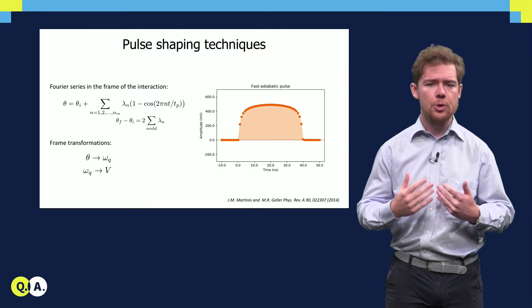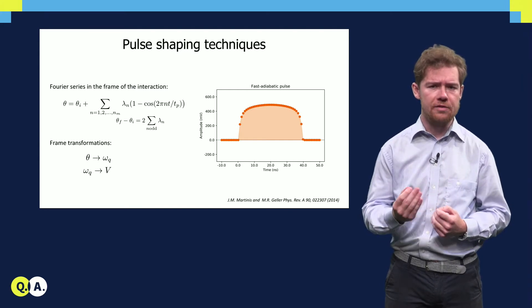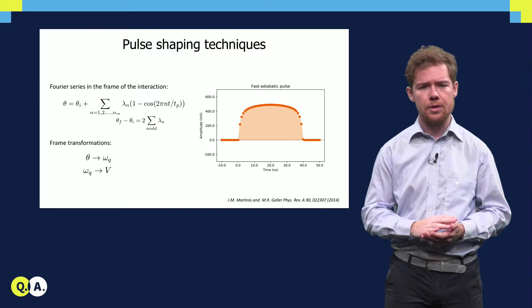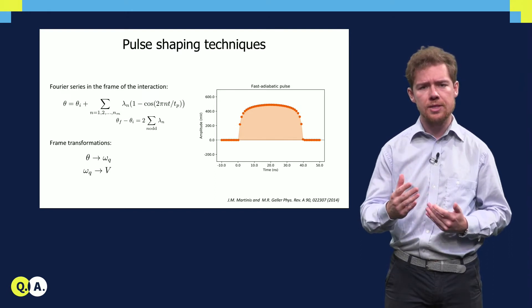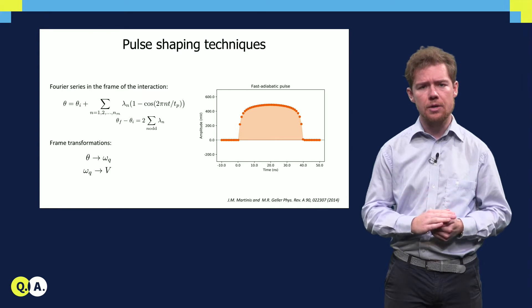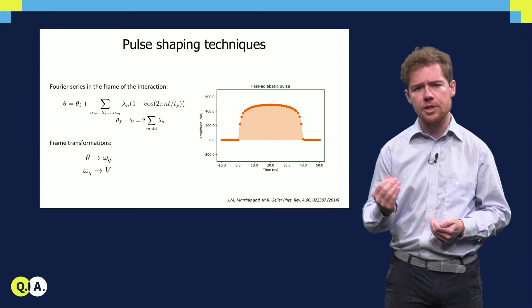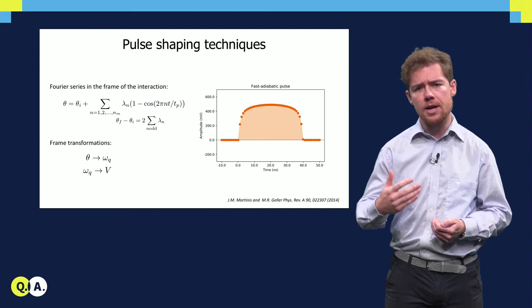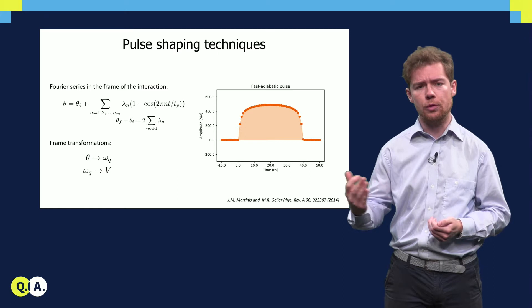This is typically done using a special pulse shape, known as a fast adiabatic pulse that minimizes the leakage. This pulse shape can be expressed as a Fourier series in the frame of the interaction, which, with knowledge of the system parameters, can be converted first into a frequency and then into a voltage to be applied to the flux bias line.